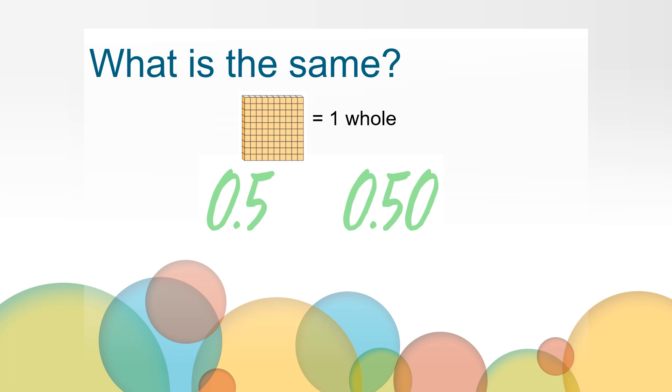Let's think about the value of these two numbers. If the flat block is 1 whole, what would the blocks for 0 and 5 tenths and 0 and 50 hundredths look like? You can draw the picture on your paper.